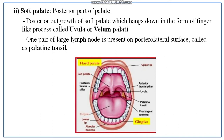From the soft palate, a posterior finger-like projection hangs down known as the uvula or villum palatine. On the dorsal side of the uvula, one pair of internal nasal pores are present. The function of the uvula is to cover the opening of these internal nasal pores during ingestion of food, so food particles cannot move inside the nasal chamber. One pair of lymph nodes known as palatine tonsils are present on the posterolateral surface of the soft palate.